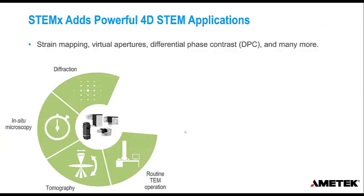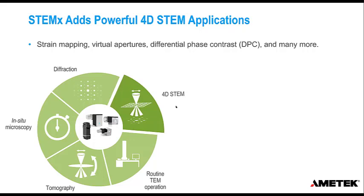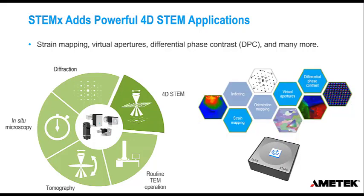The product that Gatan offers for 4D STEM is called STEMX, an add-on that works on top of our cameras. The K3IS and OneView cameras are what Roberto was using this morning. We also have the RIO camera and recently announced a hybrid pixel detector camera for diffraction imaging called STELLA. With these cameras you can do regular TEM, diffraction imaging, in-situ microscopy, and tomography. With STEMX you add 4D STEM capability, enabling applications like strain mapping, virtual imaging, differential phase contrast imaging, orientation mapping, and more.